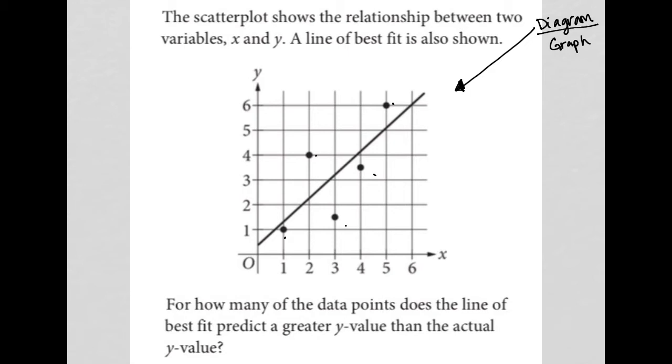But let's read the question and see exactly what we're being asked to find. So the question says the scatter plot shows the relationship between two variables, X and Y. A line of best fit is also shown. So we see that. We see our points. We see our line of best fit.